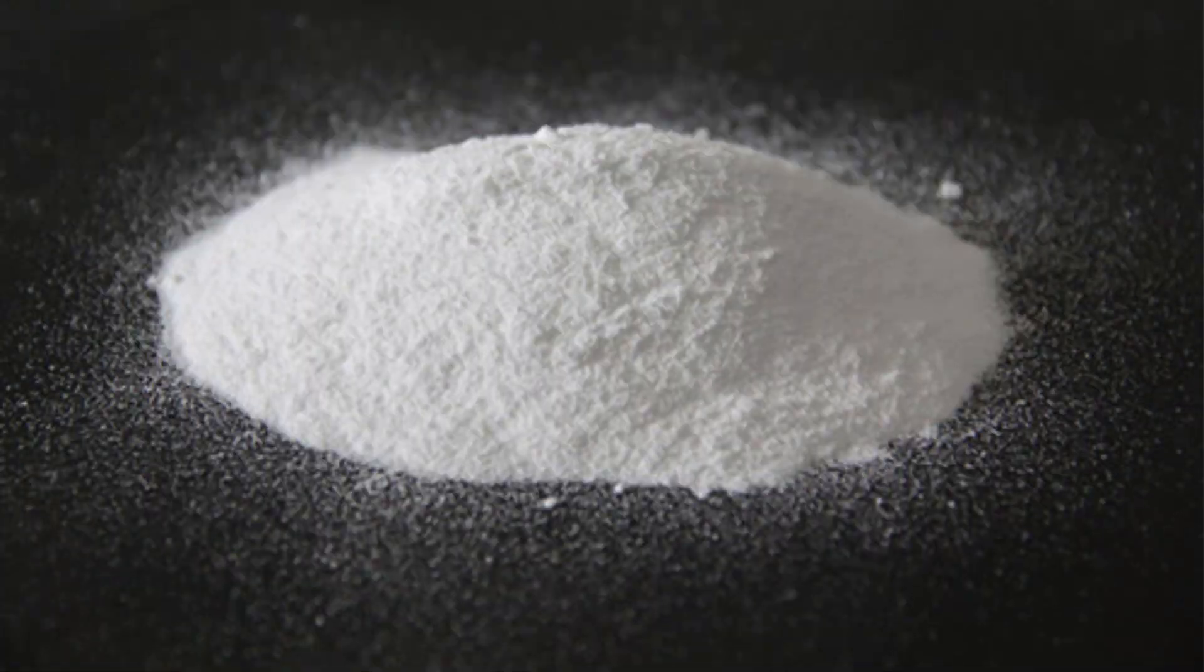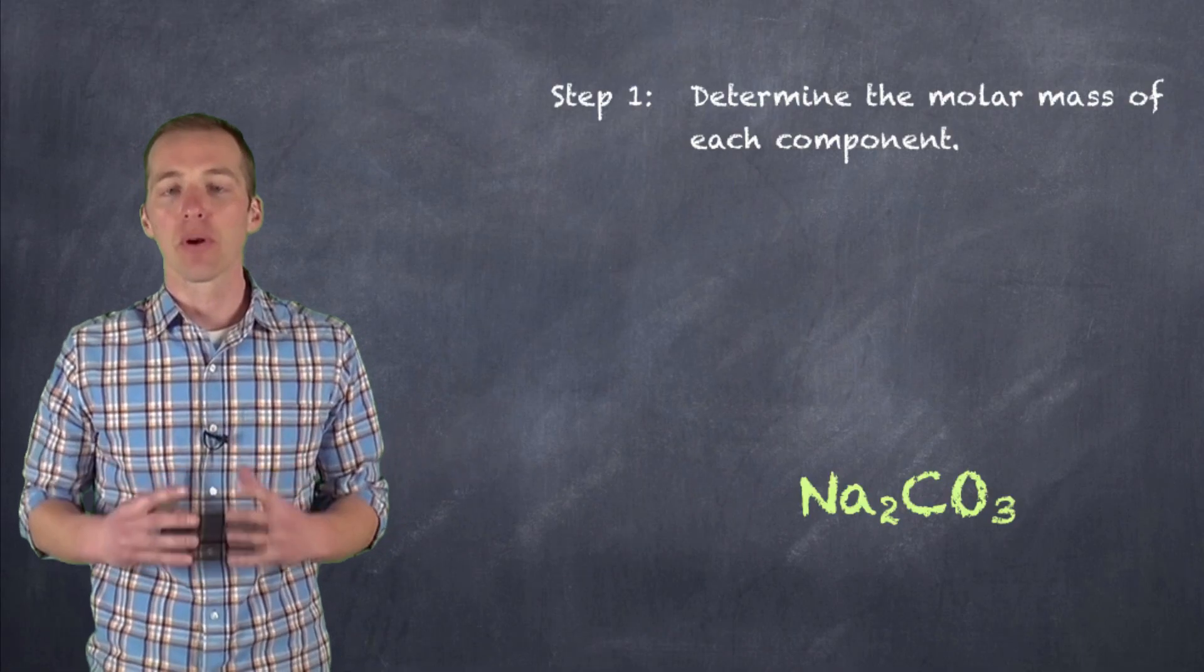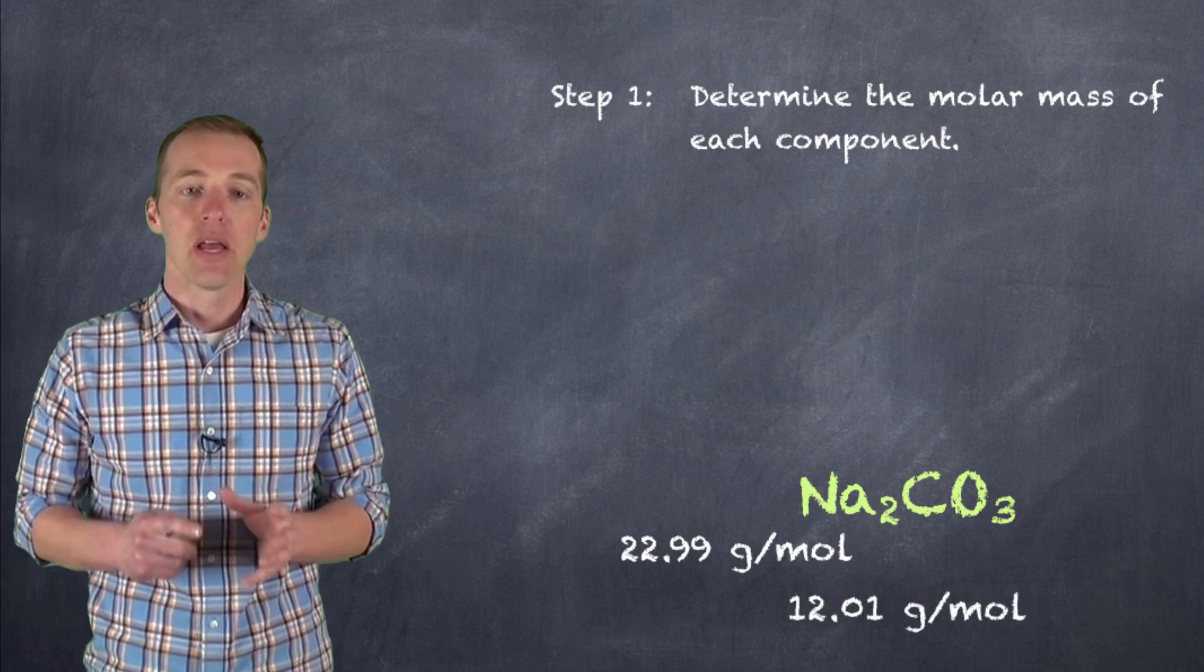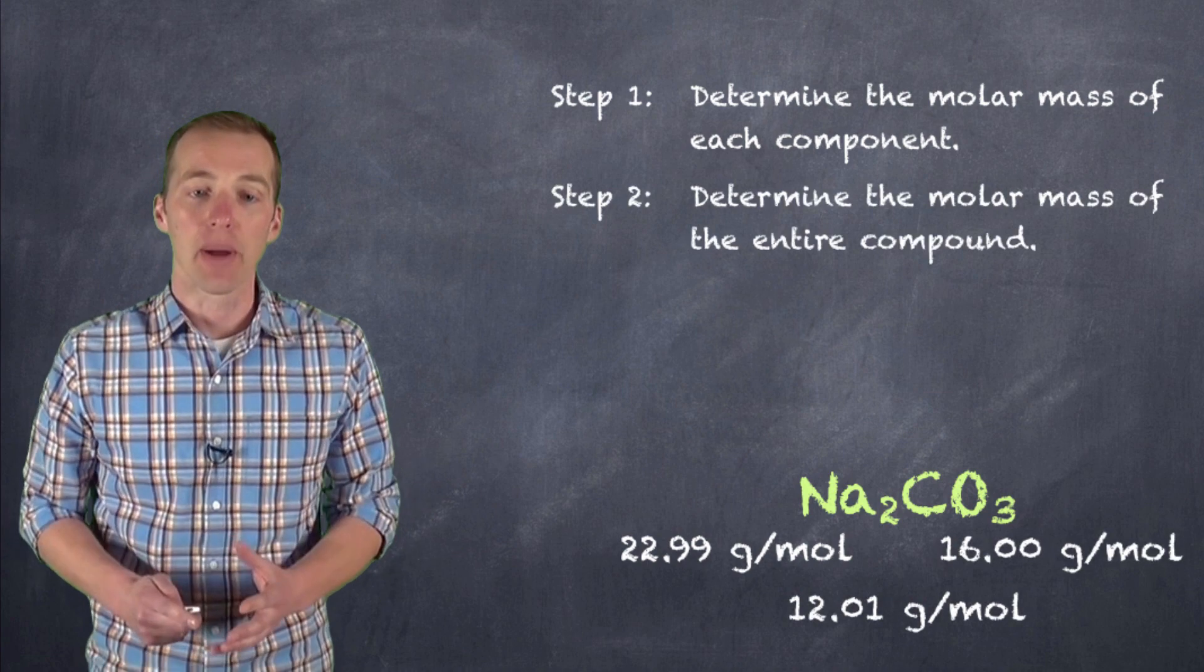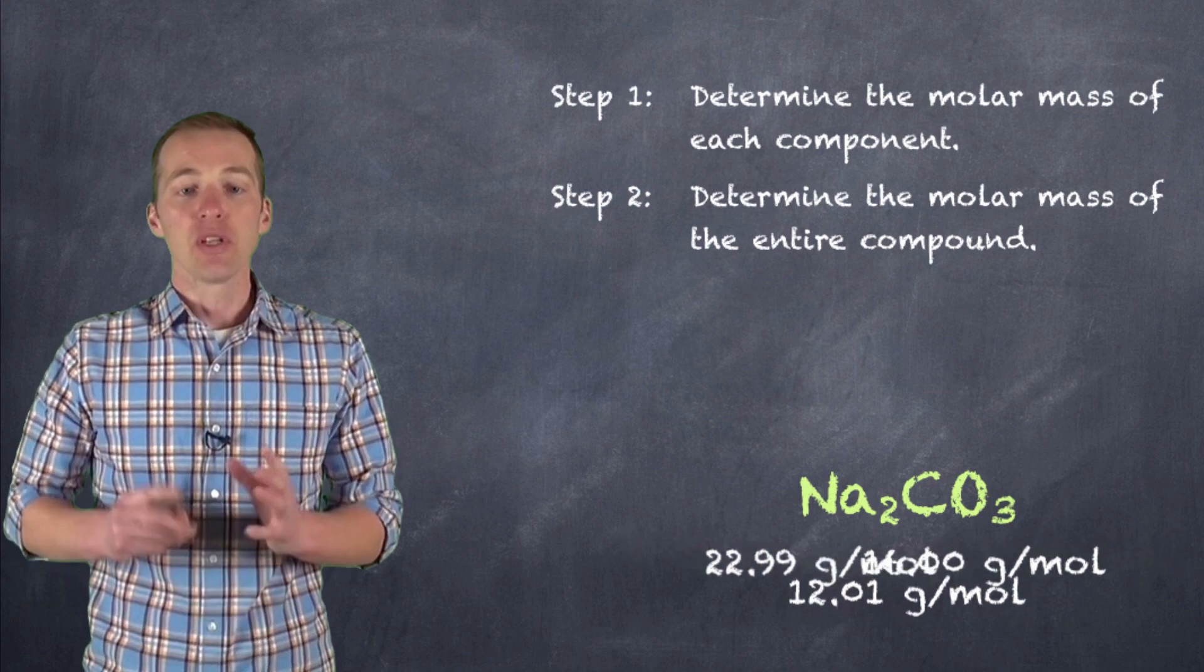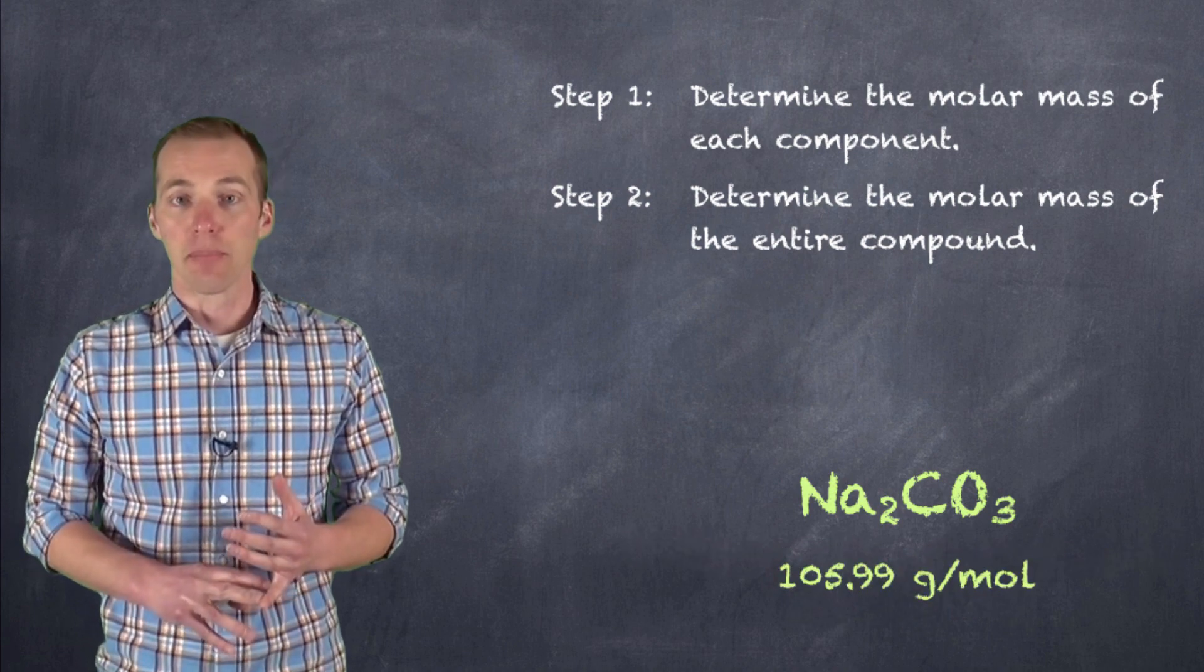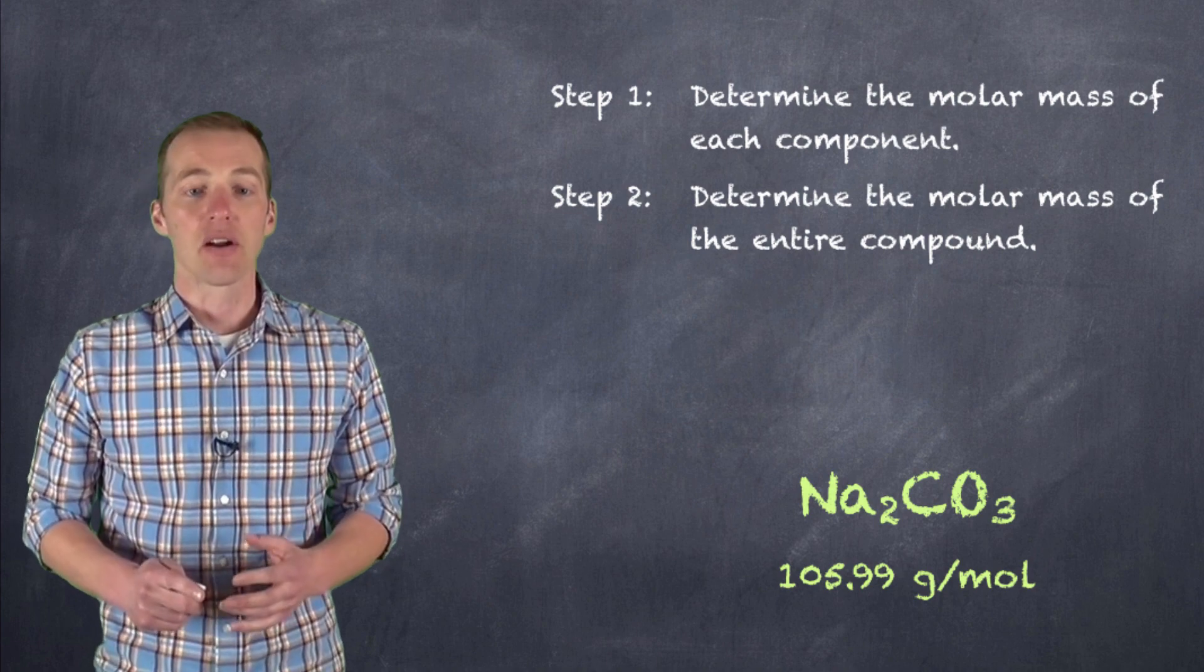So knowing our formula for sodium carbonate, we can then take the molar masses of each of the individual components and then use them to figure out the molar mass of the entire compound. Now, once we've established the molar mass of the individual components and the molar mass of the entire compound, we can now start to represent these as percentages of the compound.